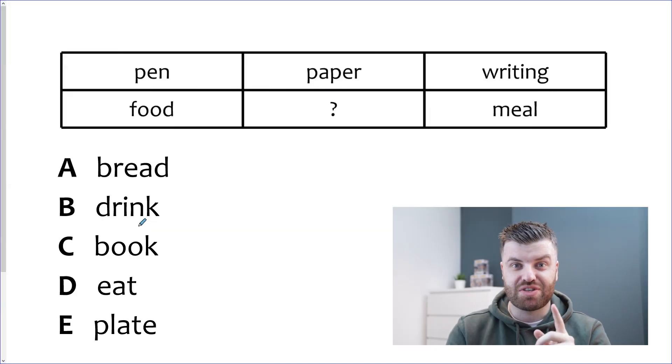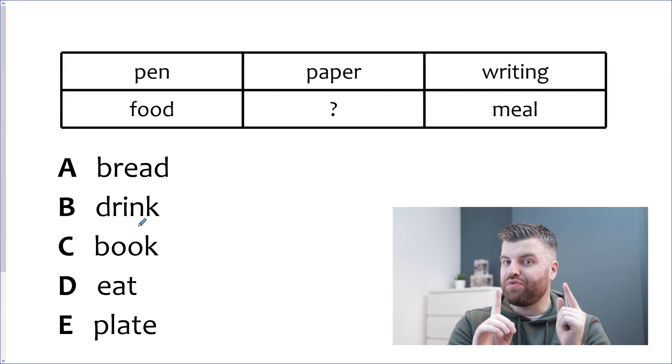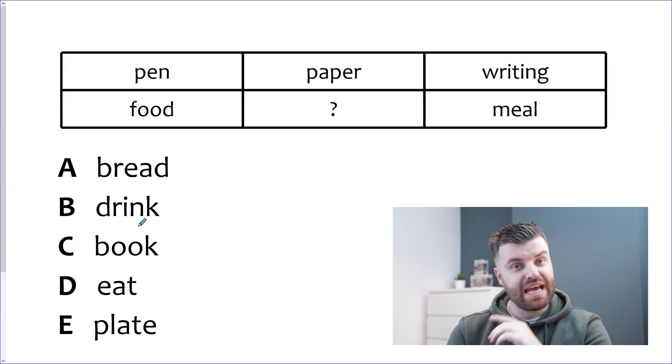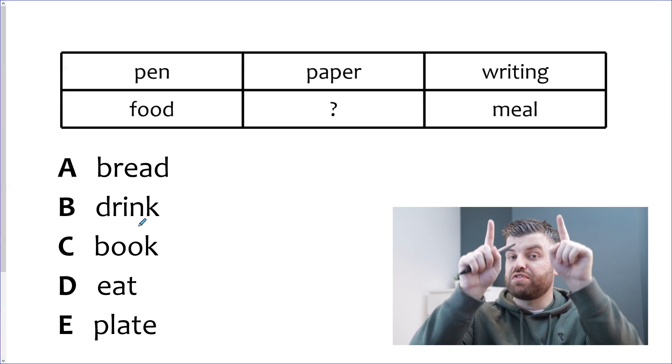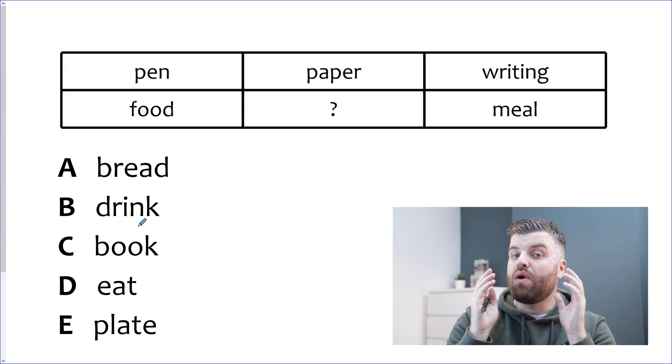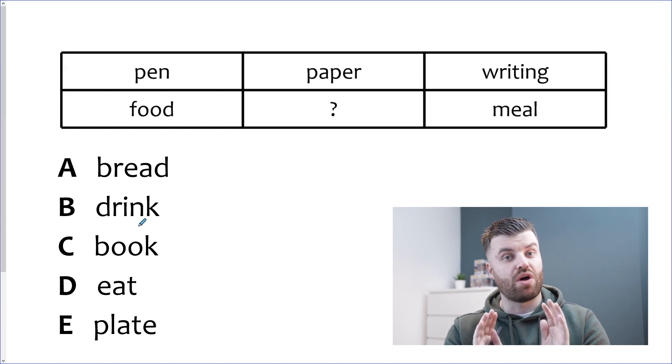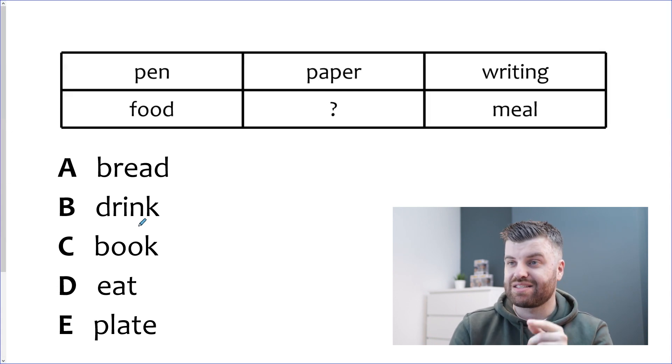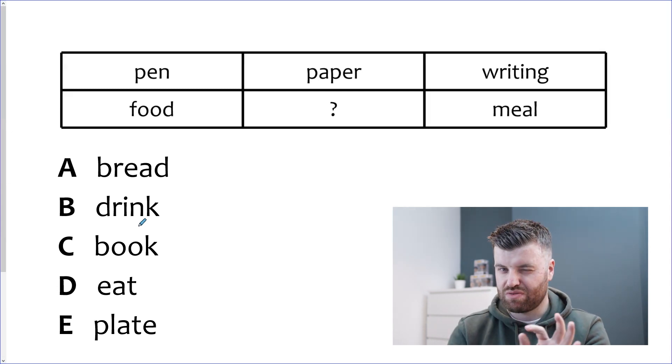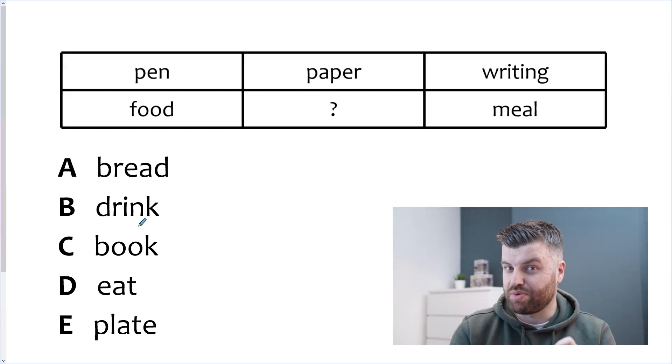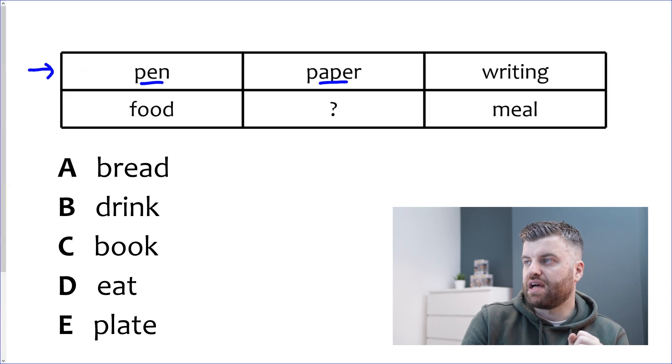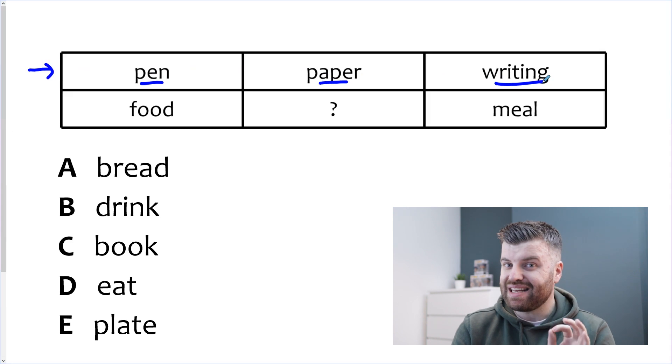Okay one more question to go through together and then I'll give you one to practice yourself. But before we do that I just want to make a really clear point. You may have already noticed that to find the link in these questions we often go down in columns. Now that is the case most of the time. However you need to be really careful. If you're doing this in the real test whilst most of them will be column links there will also be some in the row just to throw you off. This is an example of that. Let's take a look.